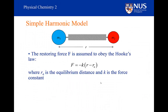So the restoring force is in the opposite direction to r. If r minus r_e is positive — that is, the length is longer than the equilibrium bond length — there is a force trying to compress the bond. But if r is shorter than the equilibrium bond length, then r minus r_e is negative, and the force will be positive, trying to stretch the bond back towards equilibrium. The force is proportional to the displacement away from equilibrium, and the constant of proportionality is the force constant k.